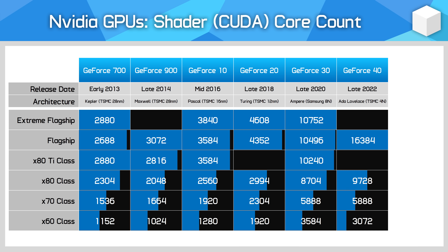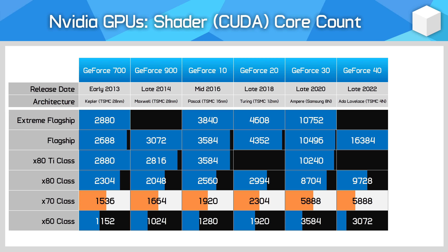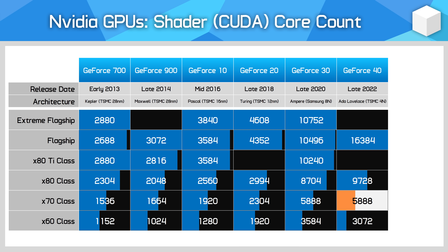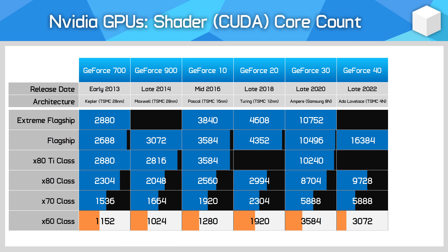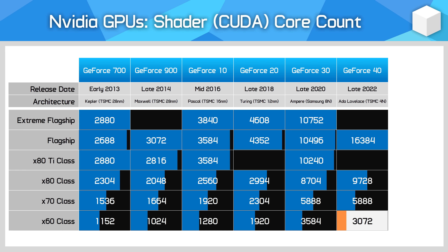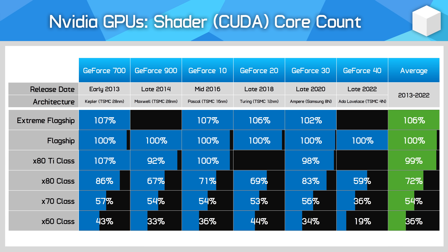How much the 80 series has been cut down over the years has changed, but generally, as far as the core is concerned, it's around a 30% reduction relative to the flagship. For the 70-tier models, the GPU core is usually about half the size of the flagship, or slightly more than half. This is true for the GTX 770, GTX 970, GTX 1070, RTX 2070, and RTX 3070, but not the RTX 4070, which was cut down more than usual to just 5,888 CUDA cores, making it just 36% the size of the flagship 4090. As we move down to the 60-tier, GPU cores are typically about one-third the size of the flagship, and this holds true for the five generations prior to Ada Lovelace — though the RTX 4060 just doesn't reach the usual standard. When we look at shader core count relative to the flagship model, we can create a six-generation average for each tier. On average, NVIDIA's 80-tier is 72% the size of the flagship model, the 70-tier is 54% the size, and the 60-tier is 36% the size.